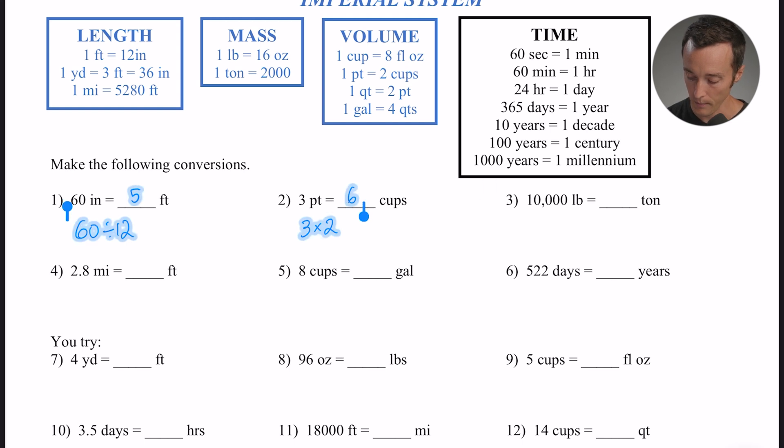All right, how about one like number three? We've got 10,000 pounds equal how many tons. So this is a measurement of mass, and I know that every ton is a group of 2,000 pounds. So essentially what we're doing is we're taking these 10,000 pounds and we want to divide it into groups of 2,000, because every ton is 2,000 pounds. So 10,000 divided by 2,000 is 5. So that's the same as 10,000 pounds is the same as 5 tons.